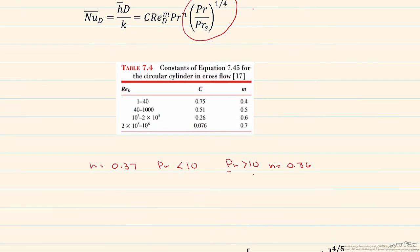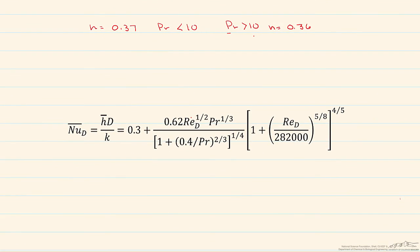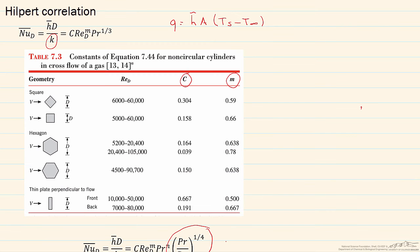But in addition, notice that all of these are functions of the Reynolds number, and the Reynolds number is equal to the velocity times the diameter divided by the kinematic viscosity. So we have to look up the kinematic viscosity at the proper temperature as well. So let's start with the Hilpert correlation.